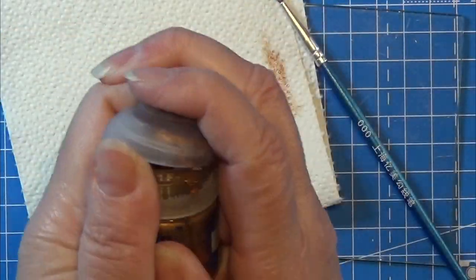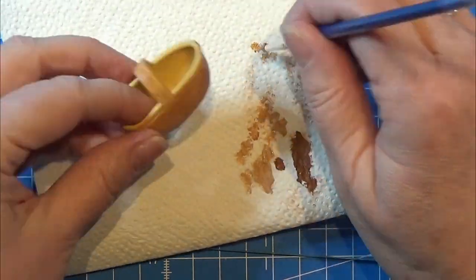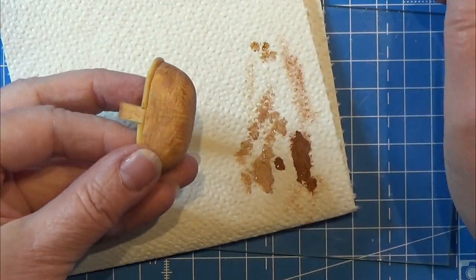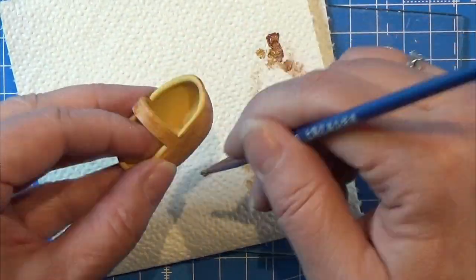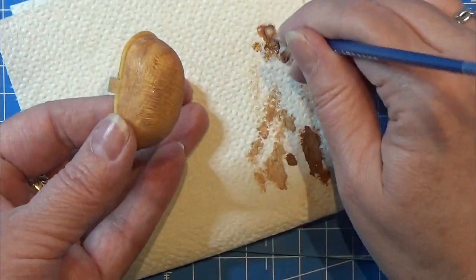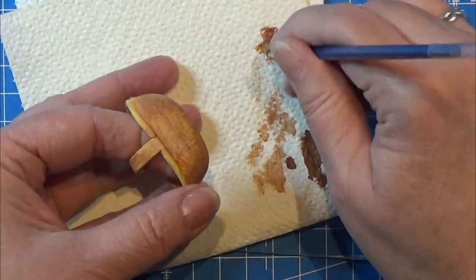And then I'm actually using a dark gold color, again just dry brushing it all over this little basket and when I'm happy with it I'm just leaving it to dry.